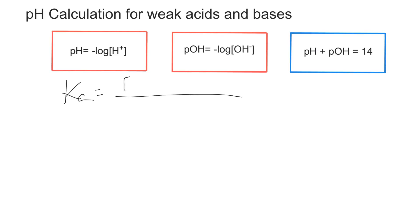So Ka is equal to product over reactants. And that would be concentration of hydronium times the concentration of propanoate, so CH3CH2COO-, over our only reactant, which would be in this case propanoic acid. So CH3CH2COOH.